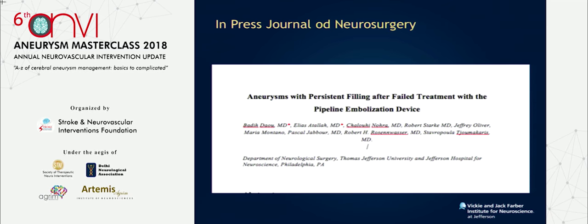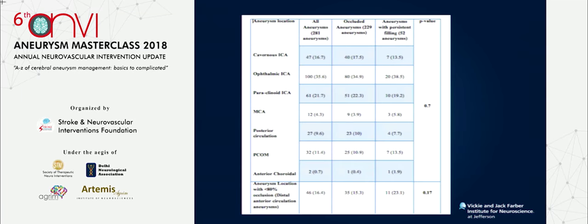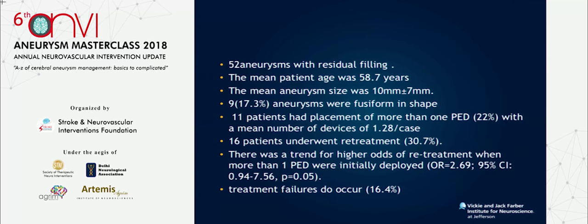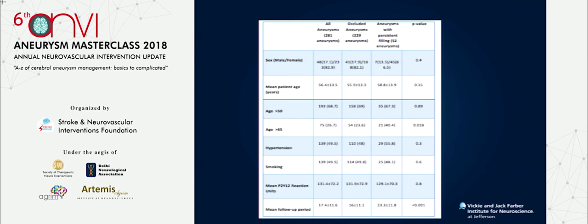I'm also talking about aneurysms that failed pipeline. This paper just got accepted in Journal of Neurosurgery — we looked at the causes of not responding to pipeline. It was 52 aneurysms; 17% were fusiform, 16 patients — about 30% — underwent retreatment, and there was a trend for higher odds of retreatment when more than one pipeline was used. Overall treatment failure was 16%.